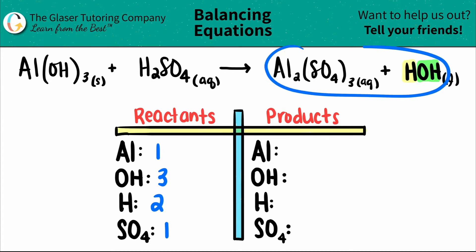Moving on to the product side, I see that I have aluminum, and there's a two here. So I have two aluminum. Now I see parentheses around my sulfate. The number is the three. There are three total sulfates. So for the sulfate down here, I'm just going to put a three.